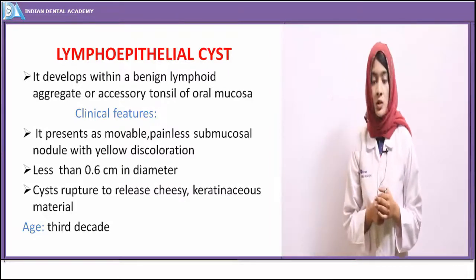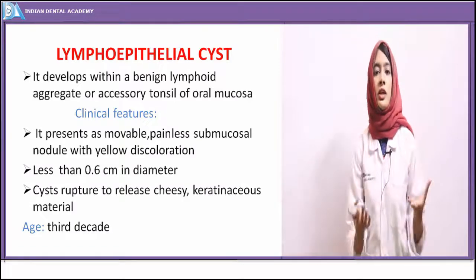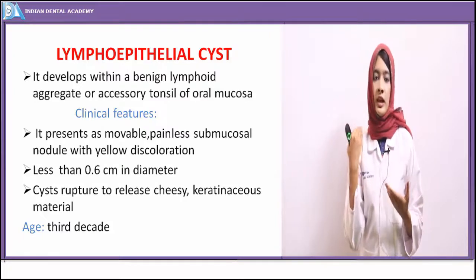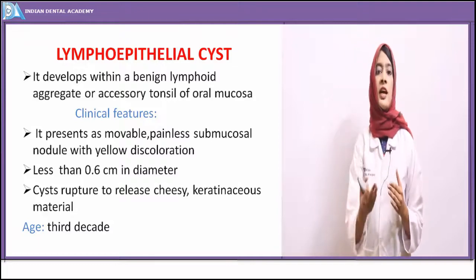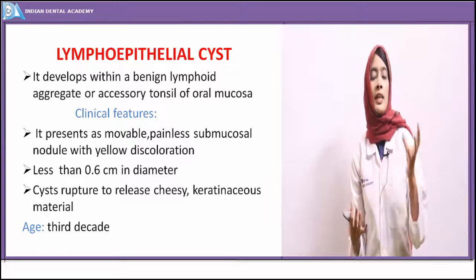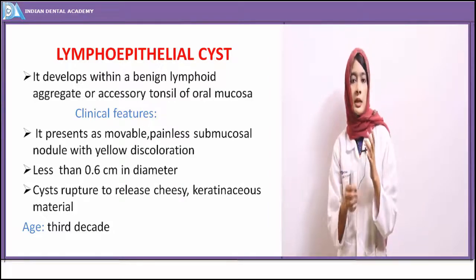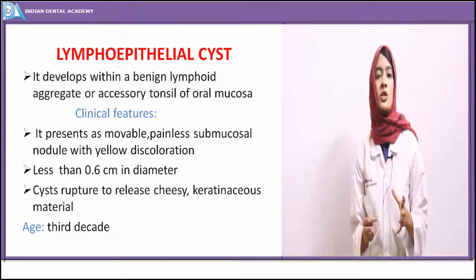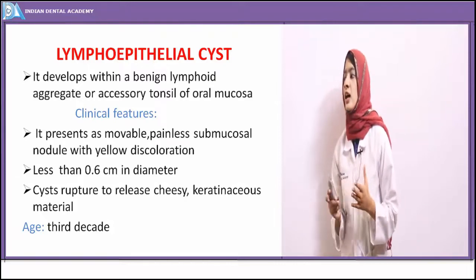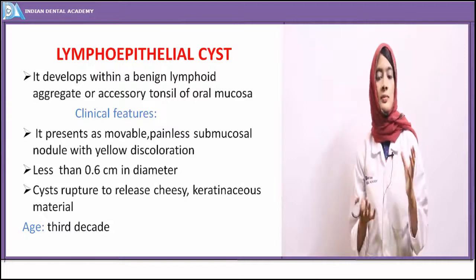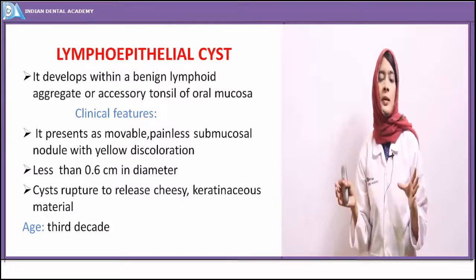Another commonly encountered soft tissue cyst is the lymphoepithelial cyst — cysts arising in normal lymphoid aggregates. Normally, lymphoid aggregates are seen on the posterior surface of the tongue in the tonsillar region. They may also be seen in the buccal mucosa or tongue. When a lymphoid aggregate shows a crypt or depression, keratin accumulates at that place, eventually leading to cyst formation. The lymphoepithelial cyst develops within a benign lymphoid aggregate.